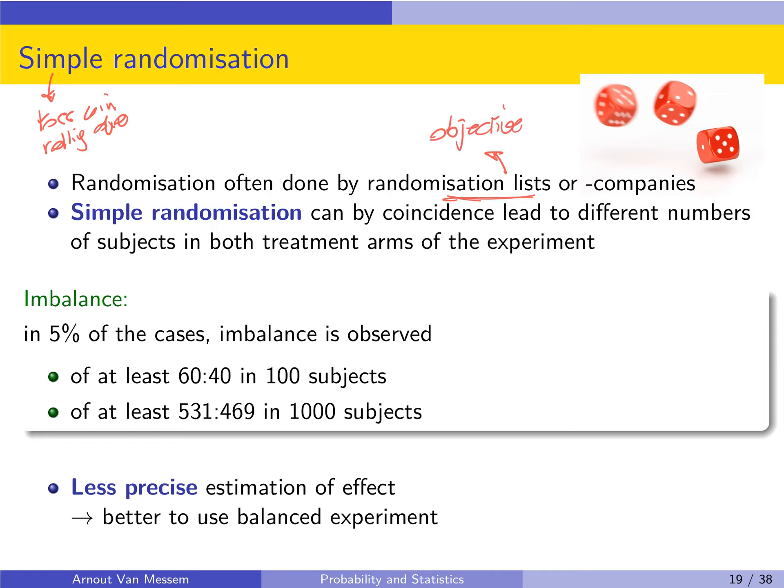So the company has no interest in the study at all, it just creates a random list and then it will tell the researcher how to divide the people or the subjects over the two groups. So the randomization in this case is done by a third party who has no interest at all in the study and so you are guaranteed that the randomization is done very objectively. Of course it is still a randomization and by coincidence it can lead to different numbers of subjects in the treatment arms of the experiment.